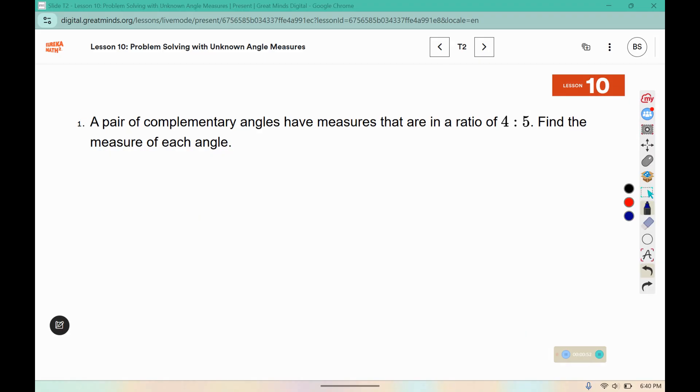A pair of complementary angles - complementary means it has a sum of 90 - have measures that are in the ratio 4 to 5. Find the measure of each angle. So angle 1 is 4, angle 2 is 5. So all together, this adds up to 90. So we could use variables in these boxes because we don't know what goes in each one. So I have 4x for the first angle, 5x for the second angle, and they have a sum of 90.